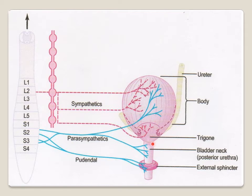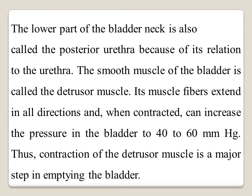The bladder neck is a funnel shape called the posterior urethra, connected to the urethra, where the urogenital diaphragm is located. The ureter enters the bladder obliquely. The lower part of the bladder neck is also called the posterior urethra due to its relation to the urethra. The smooth muscle of the bladder is called the detrusor muscle, and its muscle fibers extend in all directions.